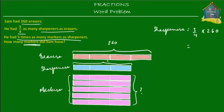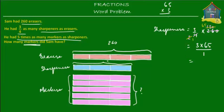Let's simplify this. If you divide both by two, you get 2 and 130. Simplifying further, dividing by two again gives 1 and 65. So sharpeners are equal to three times 65. How much is three times 65? It's three times five is 15, and three times six is 18 plus one is 19. So there were 195 sharpeners that Sam had.